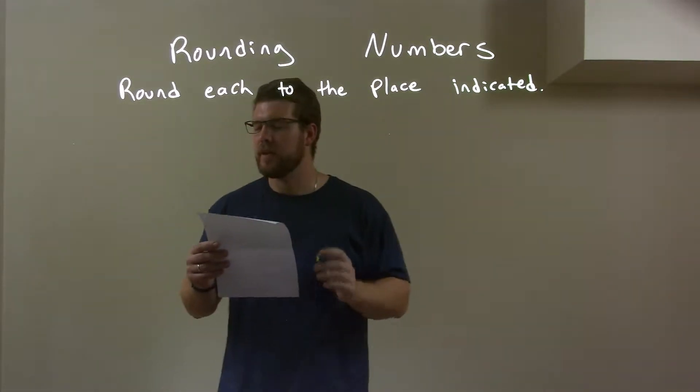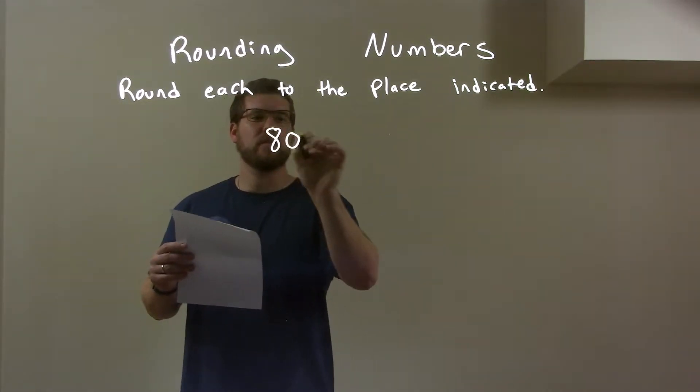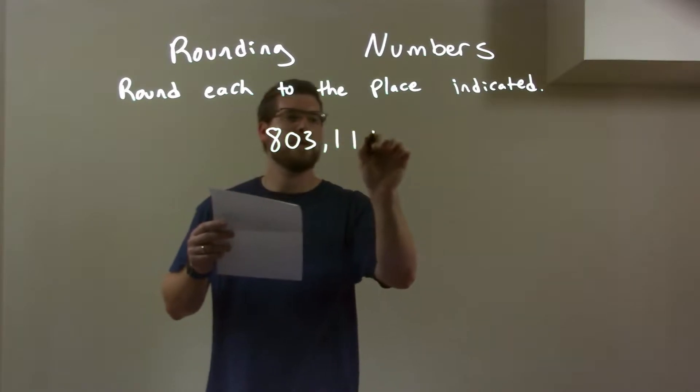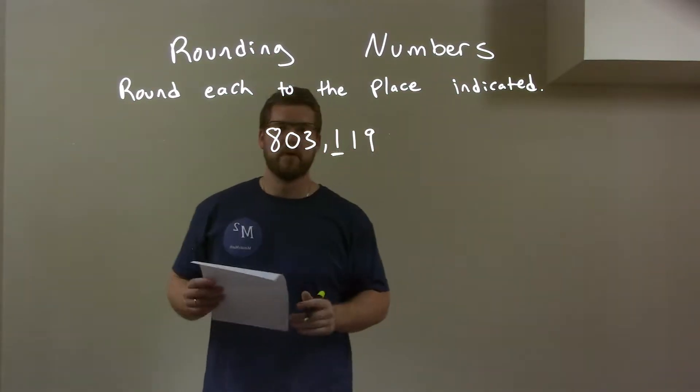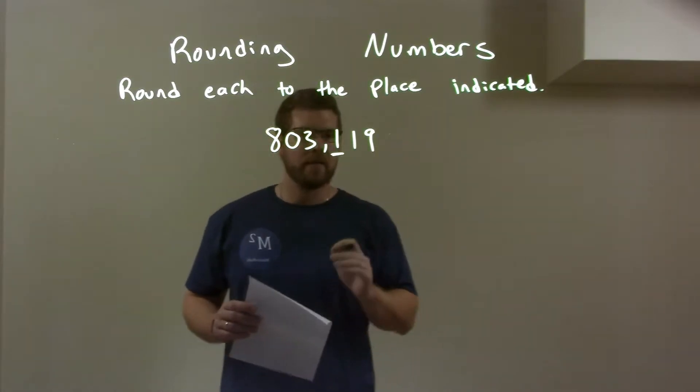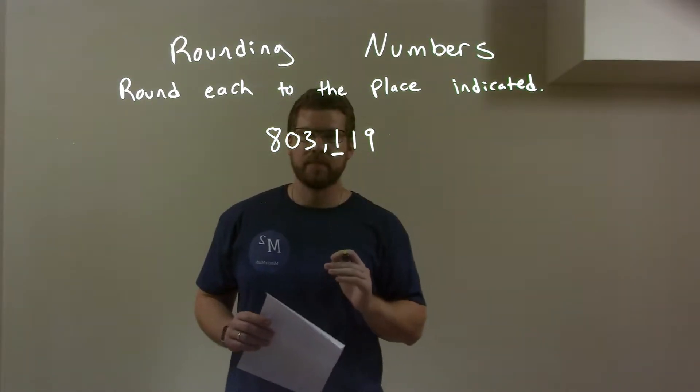So if I was given this number, 8, 0, 3, 1, 1, 9. We're rounding on this first one right there. So we look to the right and the right is just a 1.